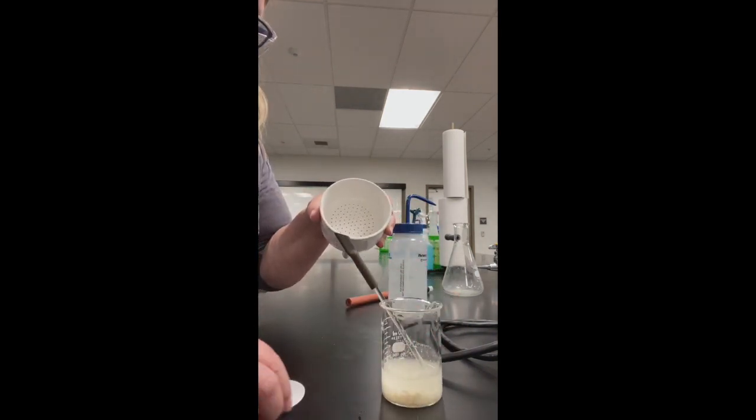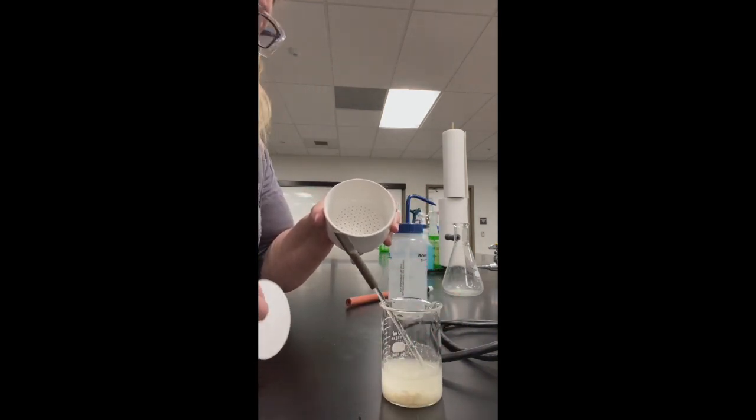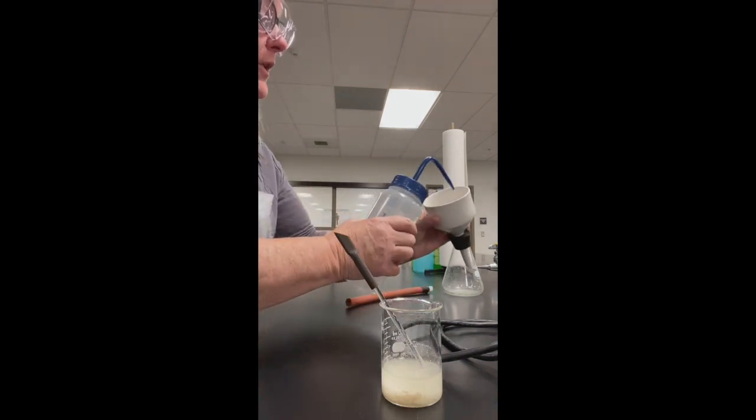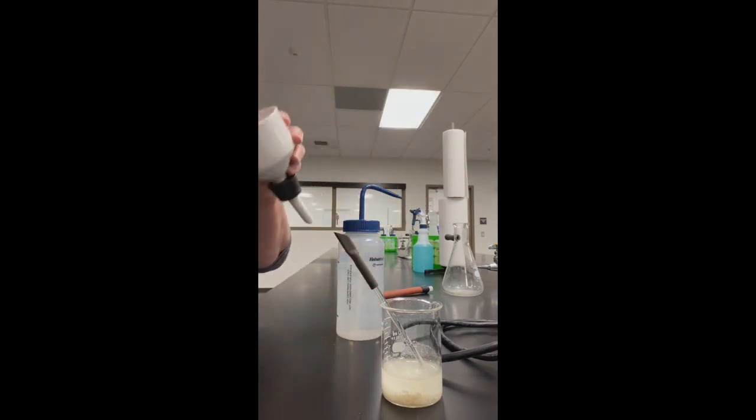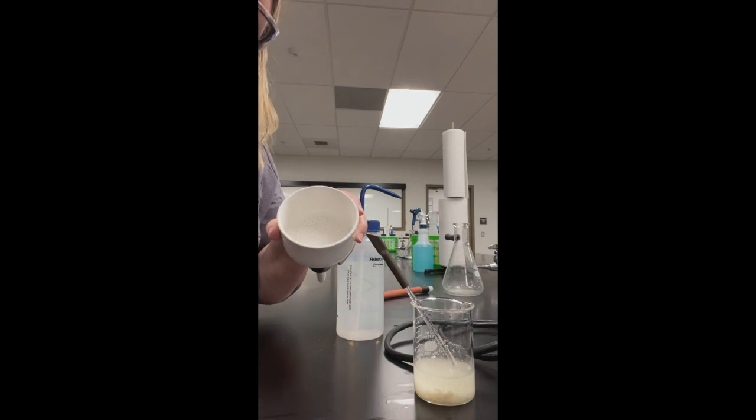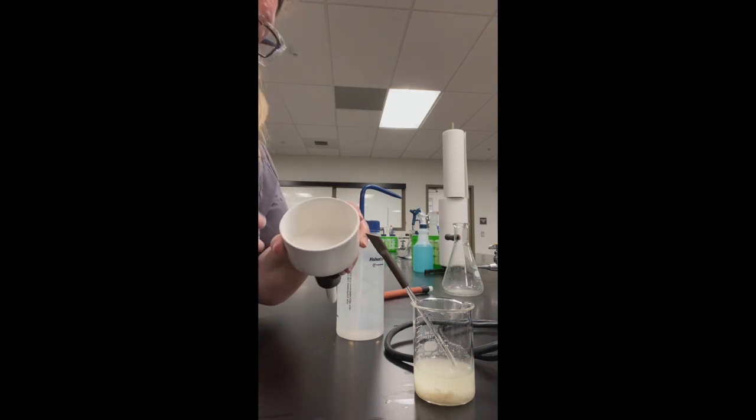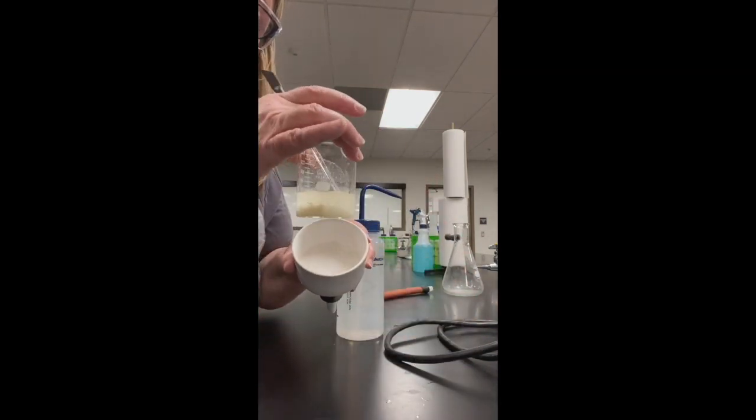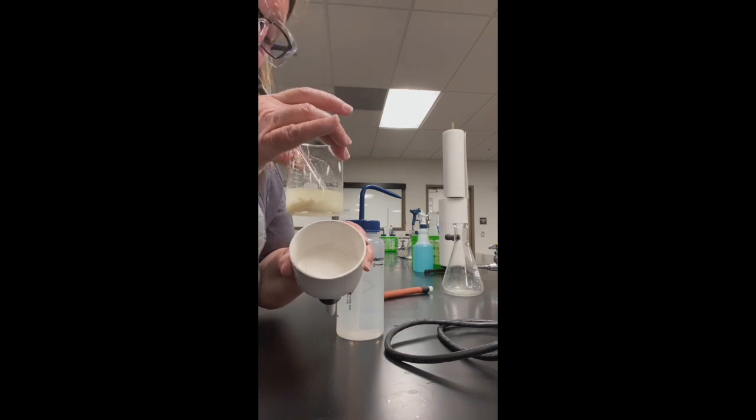Next I'm going to use my Buechner funnel to filter the crude crystals. Keep in mind when you use a Buechner funnel, you lay the paper on flat. You put a little water in there so it stays nice and flat. And then because we're doing this filtration with cold methanol and cold water, I'm going to pre-treat this with a little bit of cold water first. That way I don't accidentally, with it being too warm, make these crystals go out of solution.